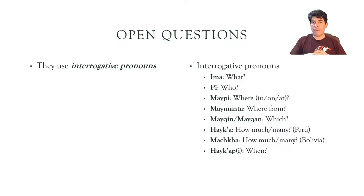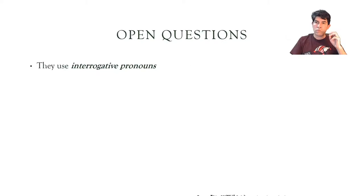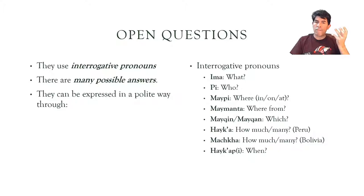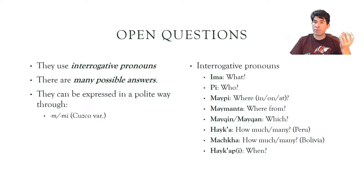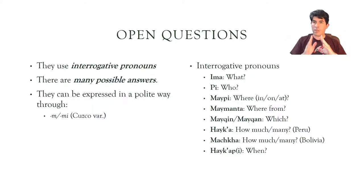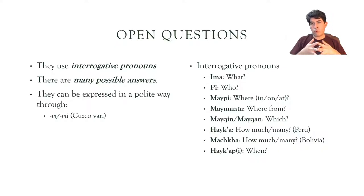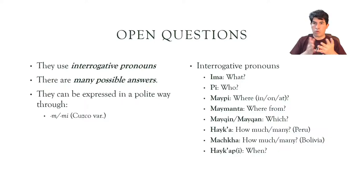Now, you can combine those interrogative words, most often, with some suffixes that help soften the question — they help you ask the question in a more polite way. Those suffixes include the evidential for first-hand experience. When you vouch for something because you've experienced it, or you're fairly certain about something, you use 'em' or 'me' — 'em' when the word ends with a vowel, and 'me' if the word ends with a consonant.